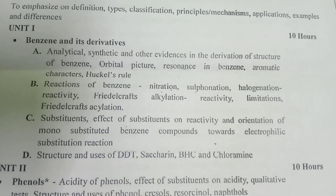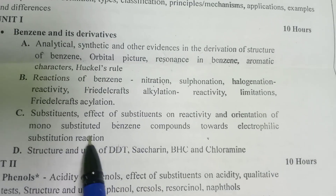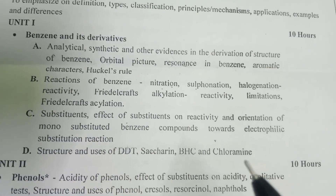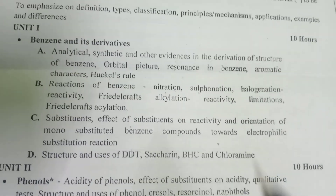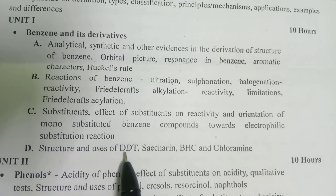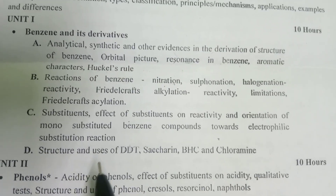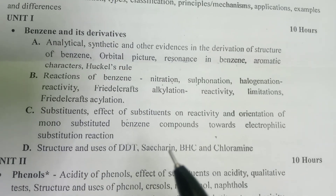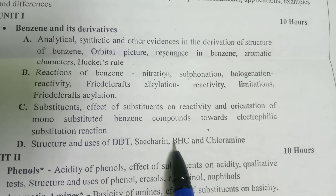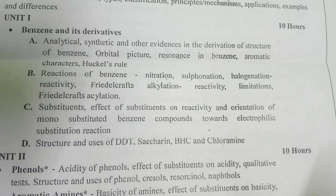Benzene is very important in this topic — electrophilic substitution reaction. If you are learning this, it will be useful. Please check the link in the description. DDT — its structure and uses. We already covered the question. That is saccharin, BHC, chloramine — these are their structures and uses.